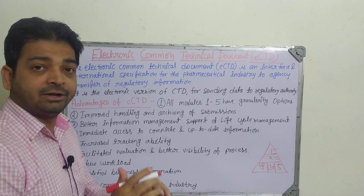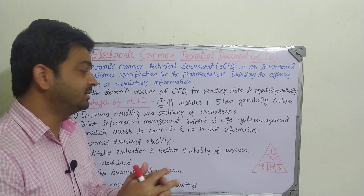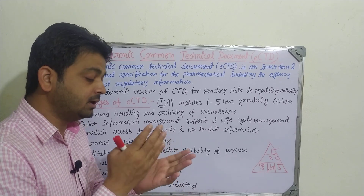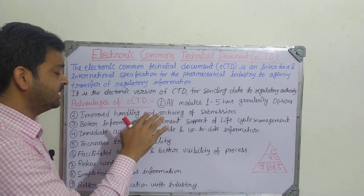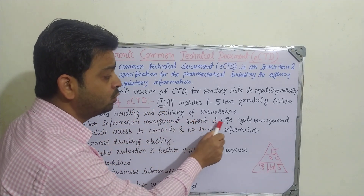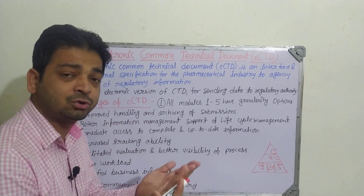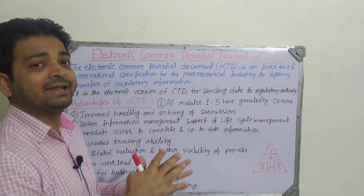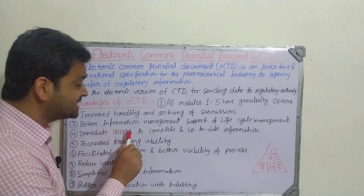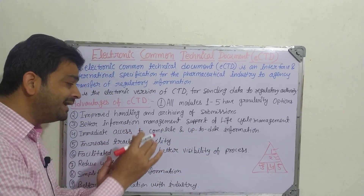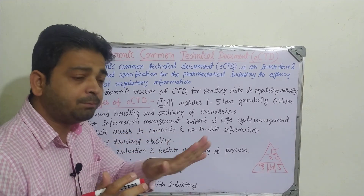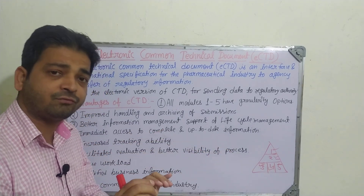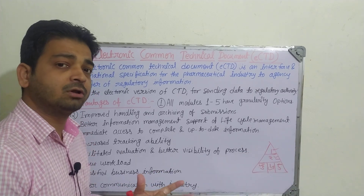Second, improved handling and archiving option for submissions — whenever we are publishing any article into any journal, that thing will be archived in our electronic devices. Just like in Gmail there is an archive where mail is stored, that storing facility can be done lifelong. Third, better information management and support to life cycle management — the information will be in the electronic database and by data mining it can be obtained whenever required, or if any incident happens with that formulation, the details will be available and cannot be destroyed.